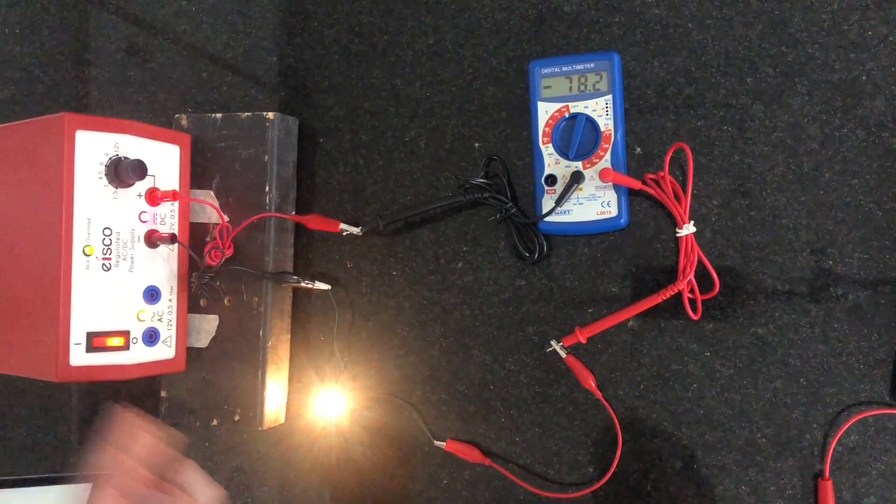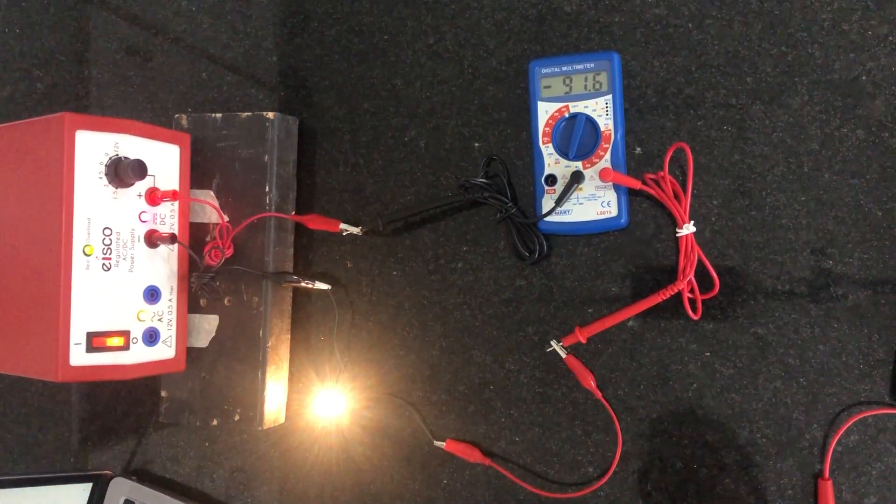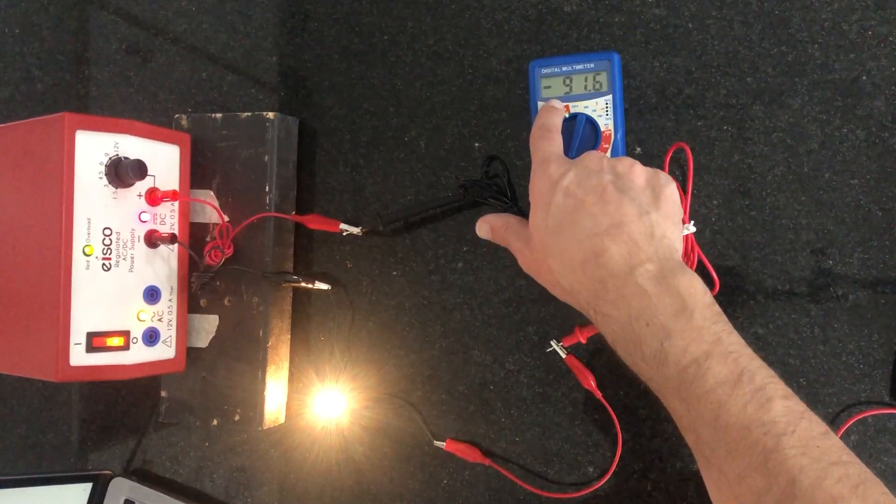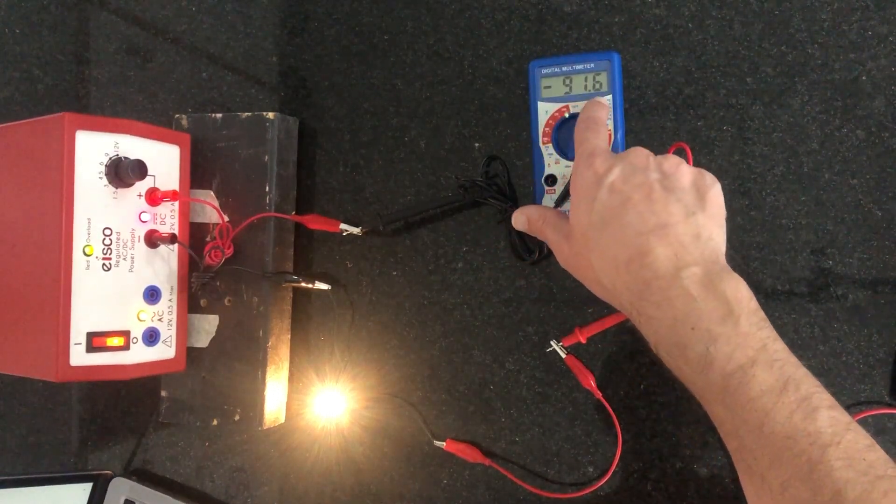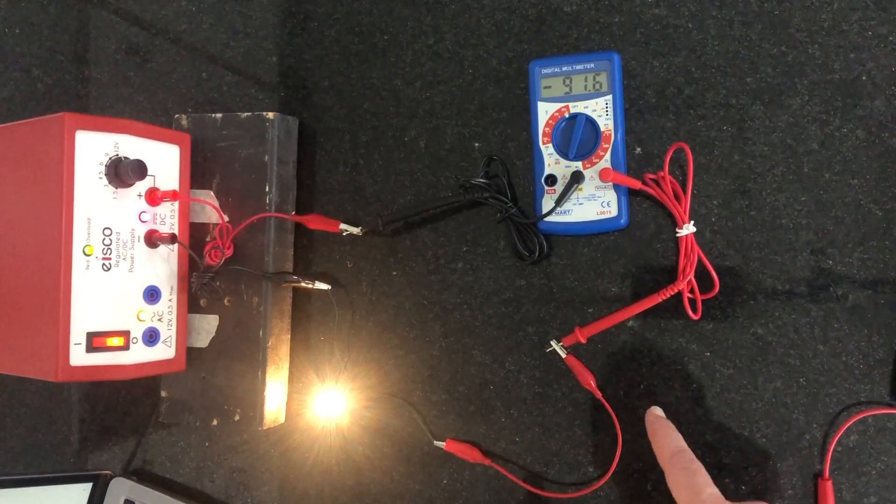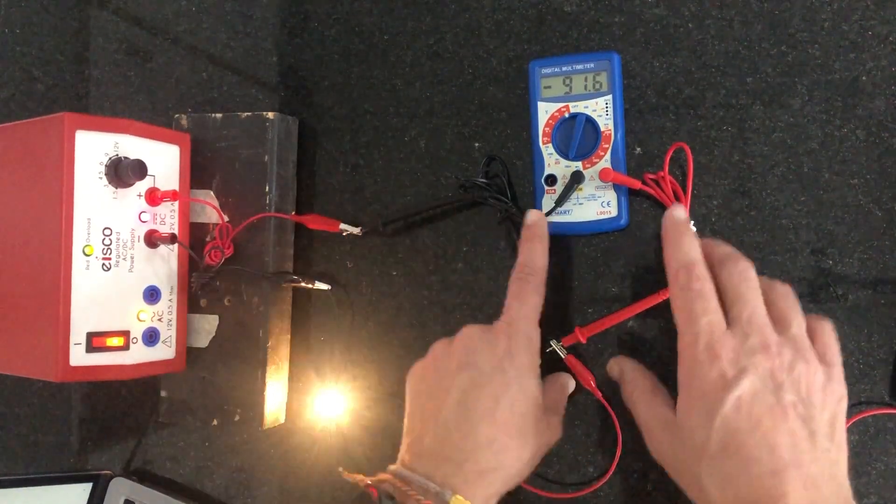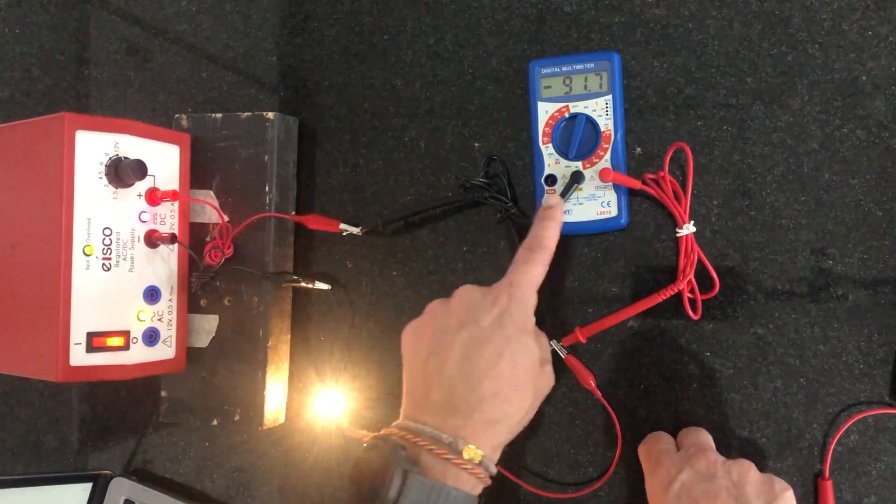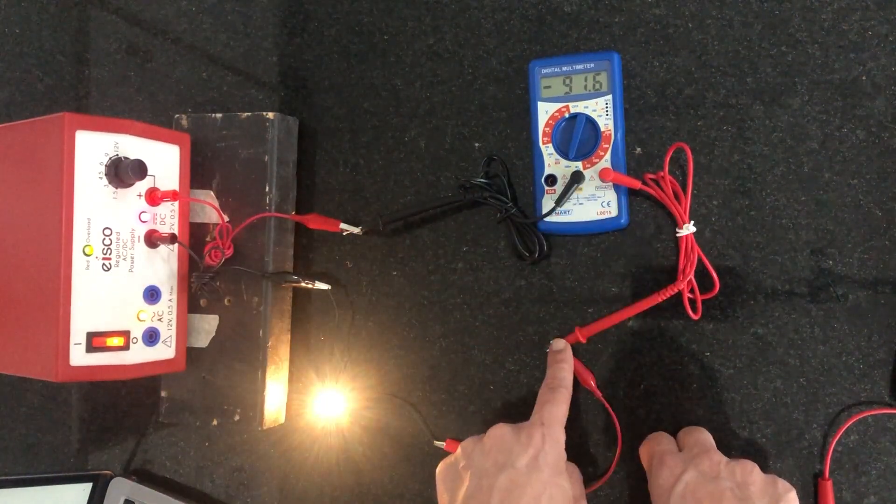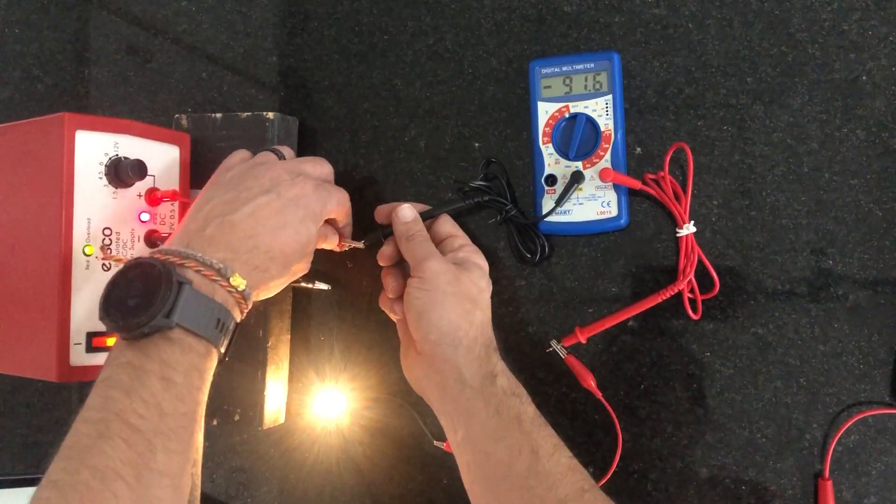I'm gonna turn on my switch and boom, bulb lights and I'm getting a negative 91.6 or 91.7. The only reason that it's negative is because the way I've set this up, it's easier for me to put my black end here and my red end here. If I was to switch those, which I can show you...